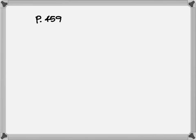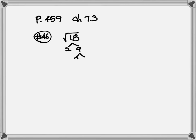Page 459, section 7.3, number 46. Here we have square root of 18. To break this down, since it's an even number, we start with 2: 2 times 9 gives 18. Then 9 breaks down as 3 and 3. For square roots, we are looking for a pair — two numbers that are the same become one. So one three goes out, and two stays inside, giving us 3√2.